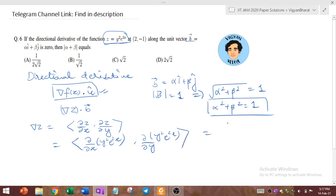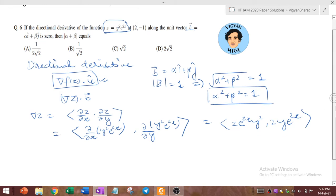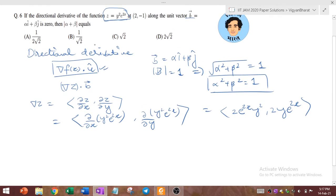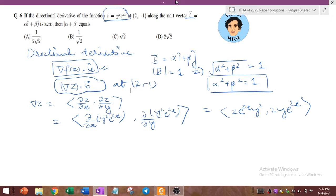So this is given by 2 e to the power 2x y square comma 2y e to the power 2x. Now this quantity we have to calculate at 2 comma minus 1. Here we have to calculate this quantity.